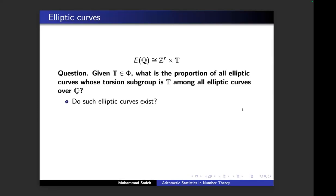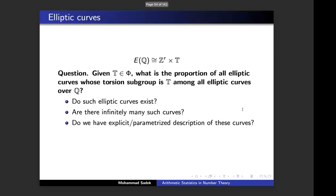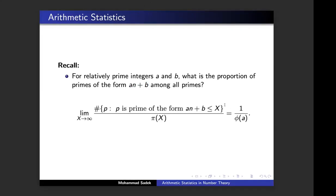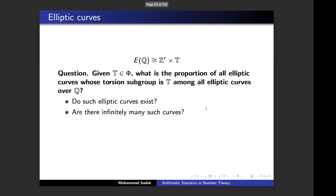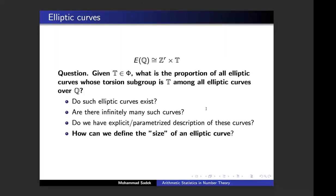First: do elliptic curves with a given torsion exist? Are there infinitely many of them — because if there are only finitely many, the proportion is trivially zero. Do we have an explicit parameterization? And the most important question: how can I measure elliptic curves? How can I tell whether one elliptic curve is bigger or smaller than another? Primes are just integers and can be ordered. But now I have geometric objects. How can I attach a size to an elliptic curve? That's the biggest challenge.